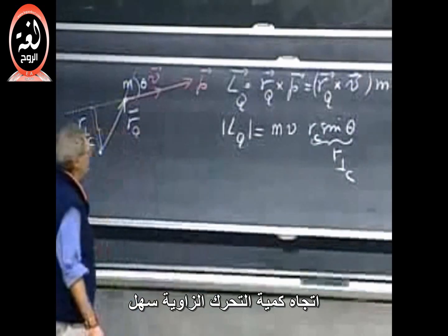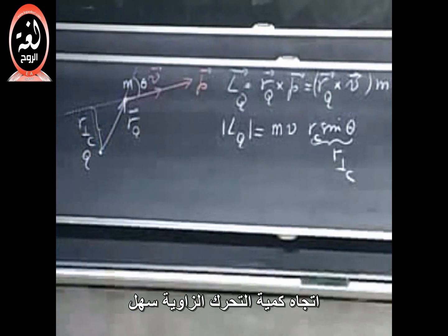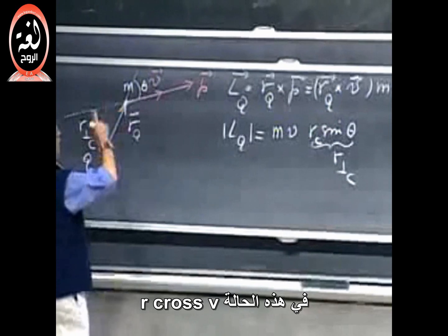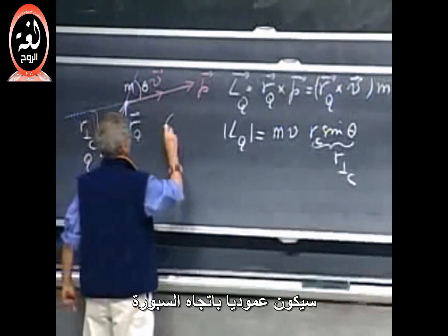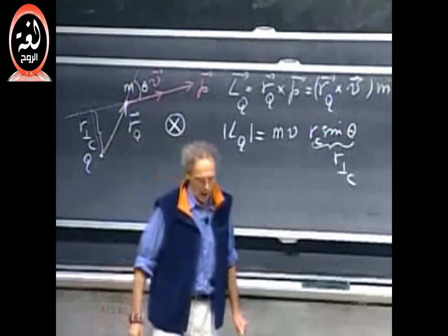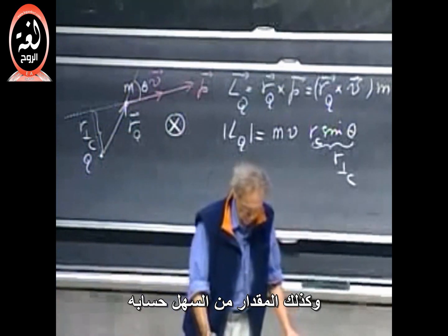The direction of the angular momentum is easy. You know how to do a cross product. So, in this case, R cross V would be perpendicular to the blackboard, and the magnitude is also easy to calculate.